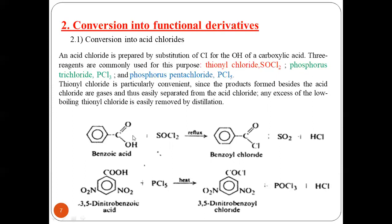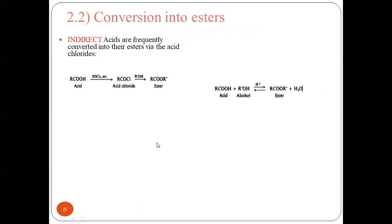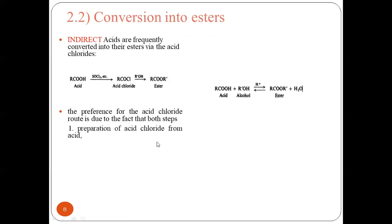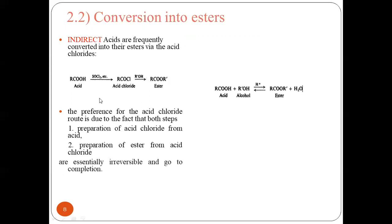During this reaction, the OH group of benzoic acid is substituted by the chloro group obtained from thionyl chloride. Second is conversion into esters. There are two methods: the indirect method, in which acids are first converted to acid chlorides and then the acid chlorides are reacted with alcohols to give esters. Both steps — preparation of acid chloride from acid, and preparation of ester from acid chloride — are essentially irreversible and go to completion.